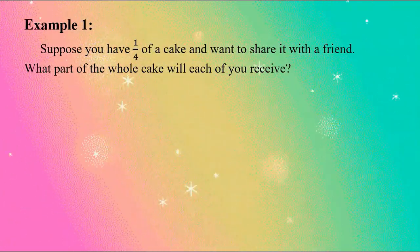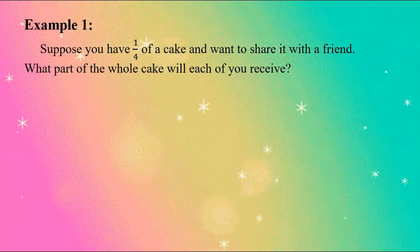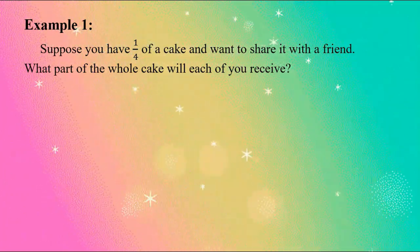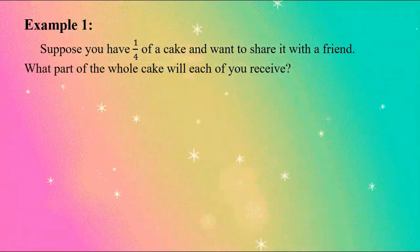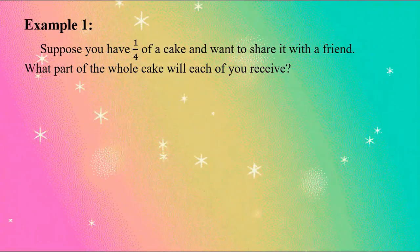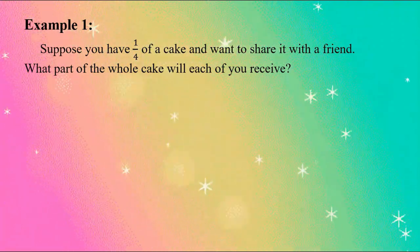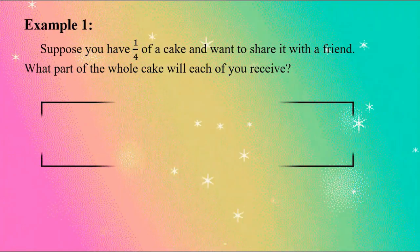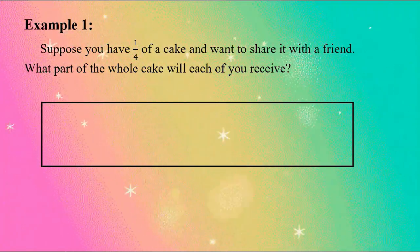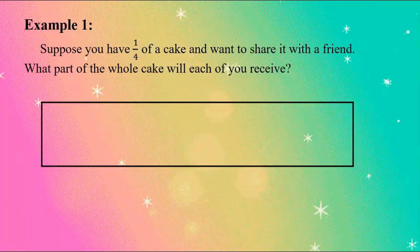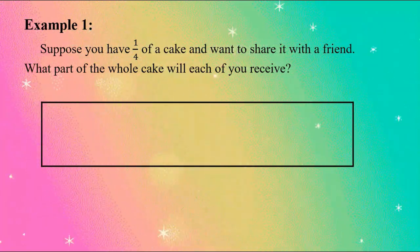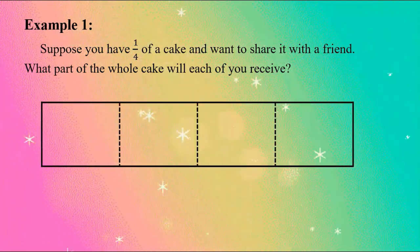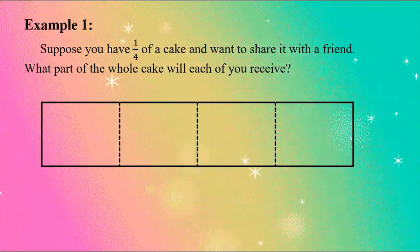Example problem one: suppose you have one-fourth of a cake and want to share it with a friend — what part of the whole cake will each of you receive? To solve this, we use a bar to represent the whole cake and divide it into four equal parts, then shade one-fourth.